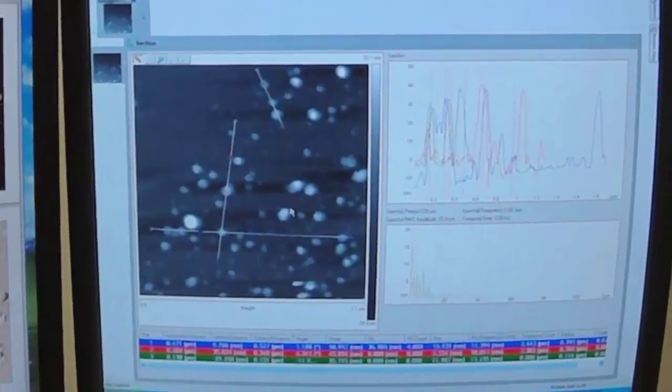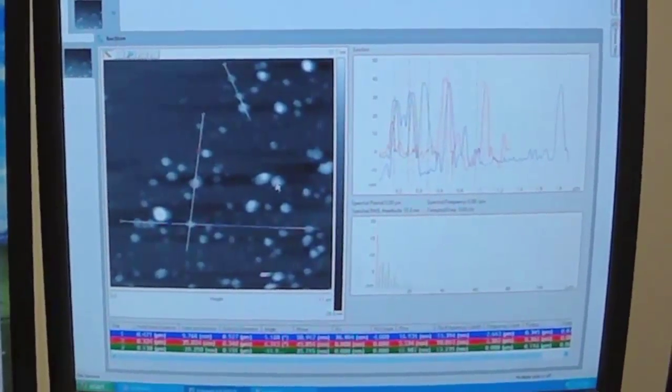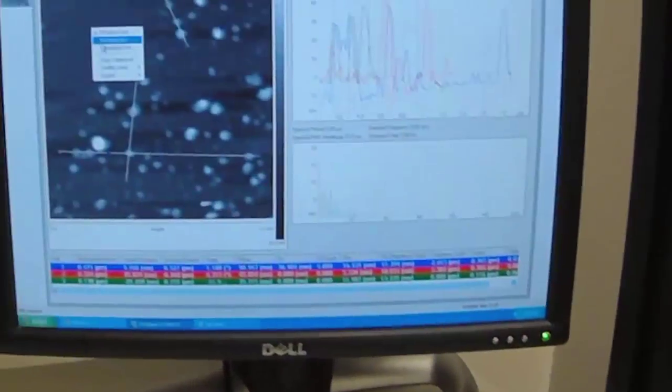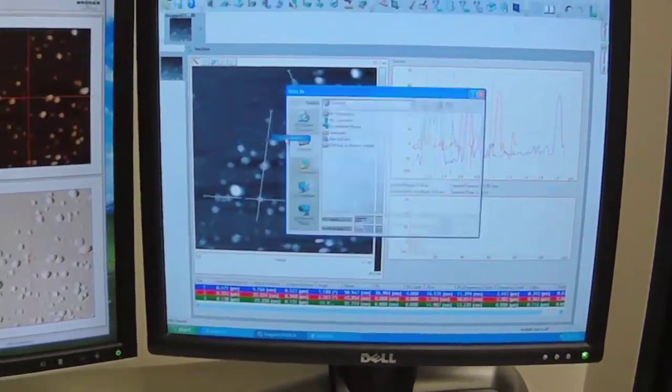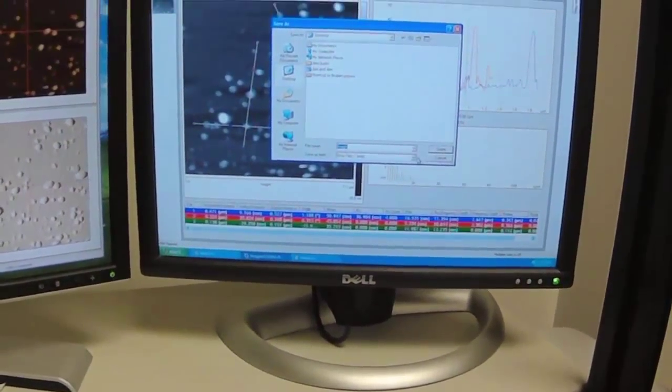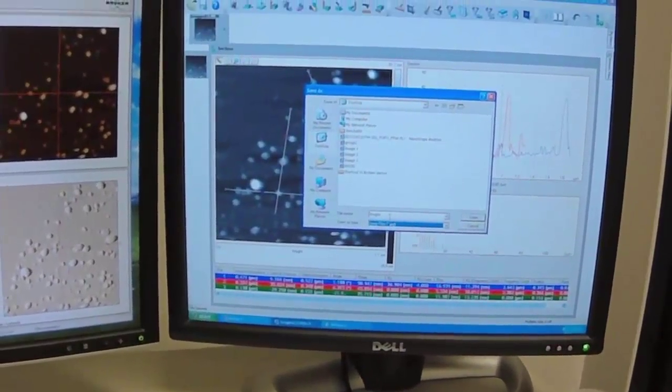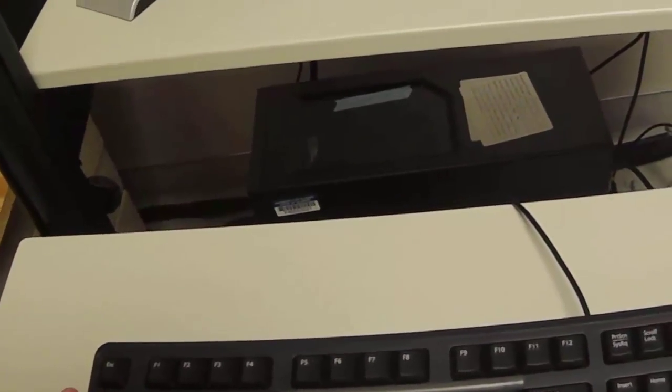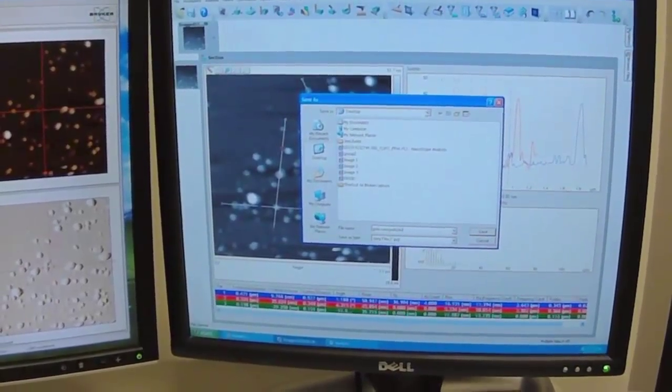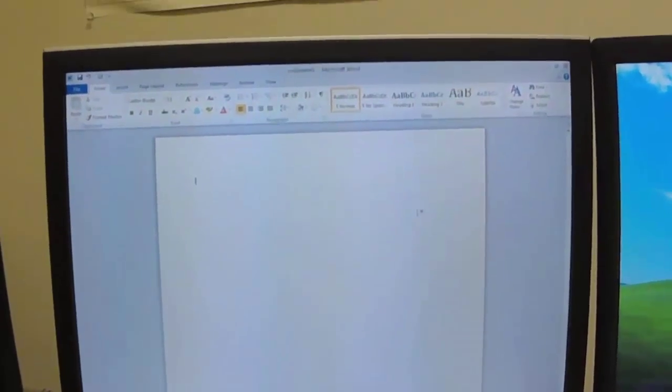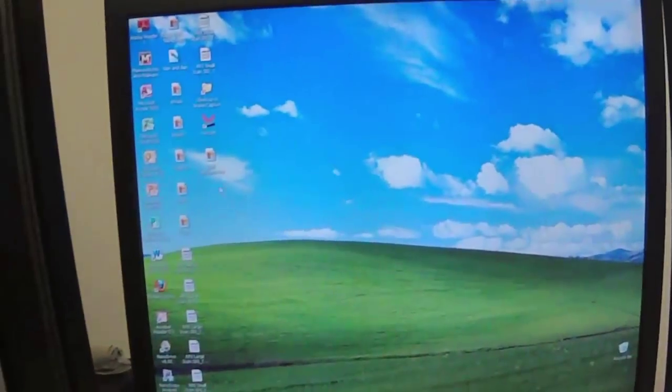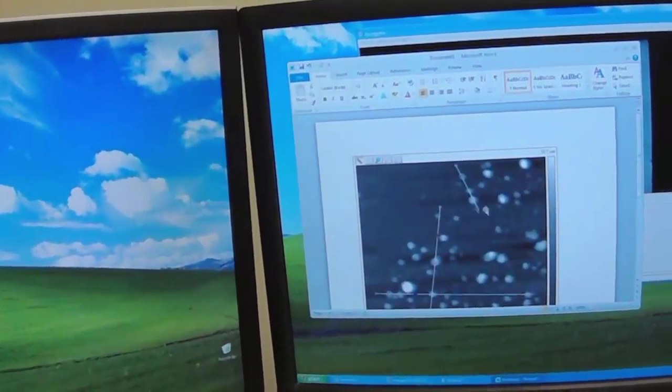If you want to save this image, and this image might be very useful because it shows not only the particles but how you're measuring them, you right click on the image and you can export the image here. JPEG is probably easier to work with in Word. And so this is my old nanoparticles. Import it into a Word document for my lab report.